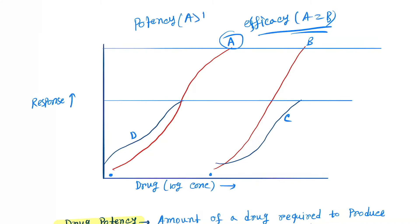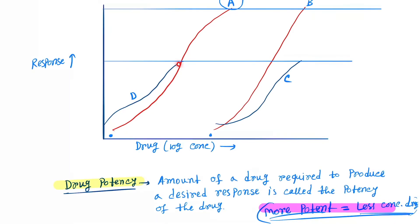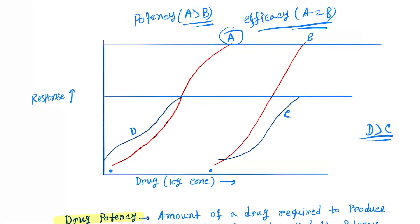Now D and C - here also the efficacy of drugs D and C are the same. Which is more potent? Drug D. So potency D is greater than C.